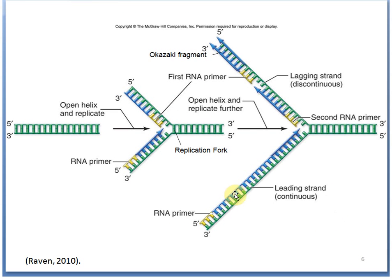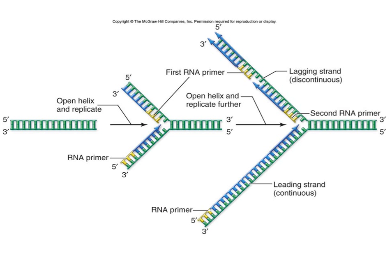Let's look at all the enzymes involved in the entire replication process. Even before RNA primase comes in, the double helix must be opened up and separated. The enzyme that does this is helicase, which sits right at the replication fork and unwinds the DNA.